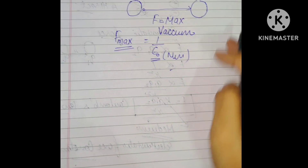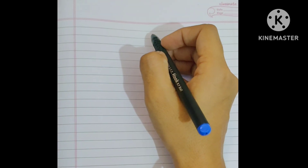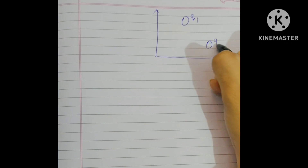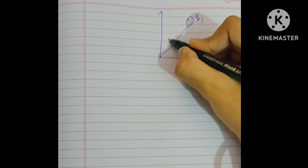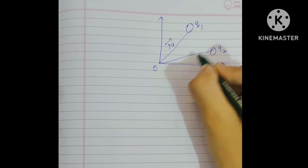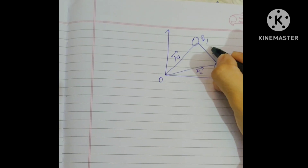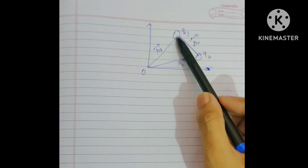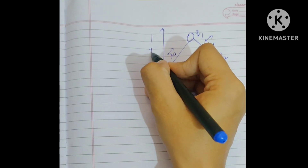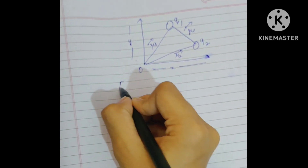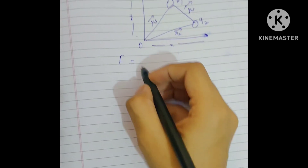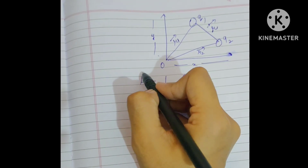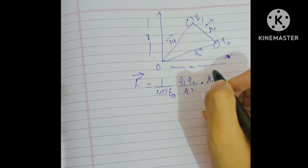Now we will discuss Coulomb's law in vector form. Consider two charges q1 and q2 placed at some distance with respect to an origin. r1 vector is the position vector of q1, r2 vector is the position vector of q2, and the displacement vector is the distance between these two charges. For a vector we must have magnitude and direction. The magnitude is: (1/4πε₀) · q1·q2 / r². To make F a vector, we must also mention direction.